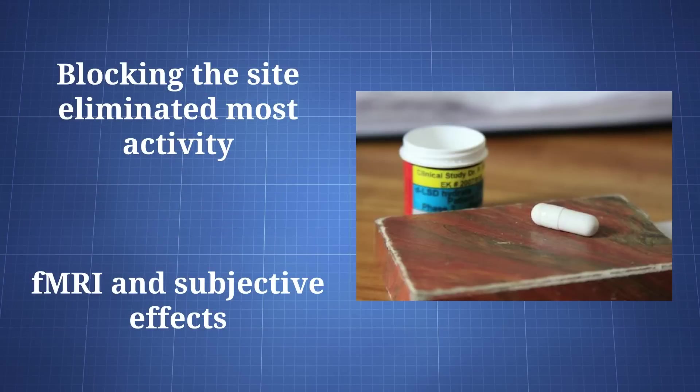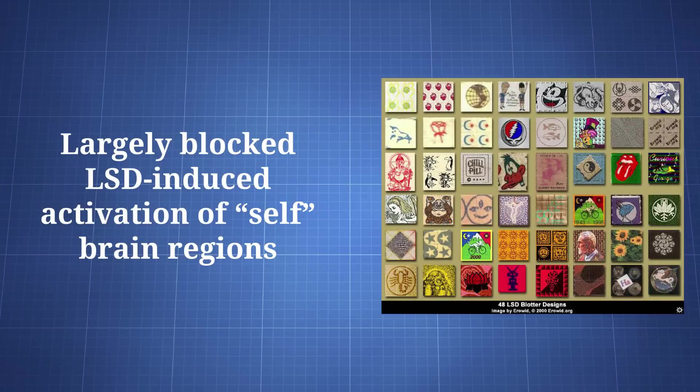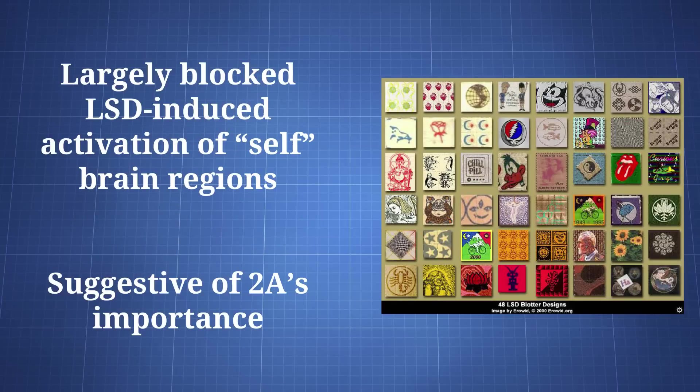Blocking that site with ketanserin was shown to practically eliminate the drug's activity. Most of the fMRI responses and subjective measures were negated with ketanserin. Antagonizing the 2A site was shown to block LSD-induced activation of self-related brain regions during the meaningless music condition. This is suggestive of 2A being a very important receptor for LSD's effect.